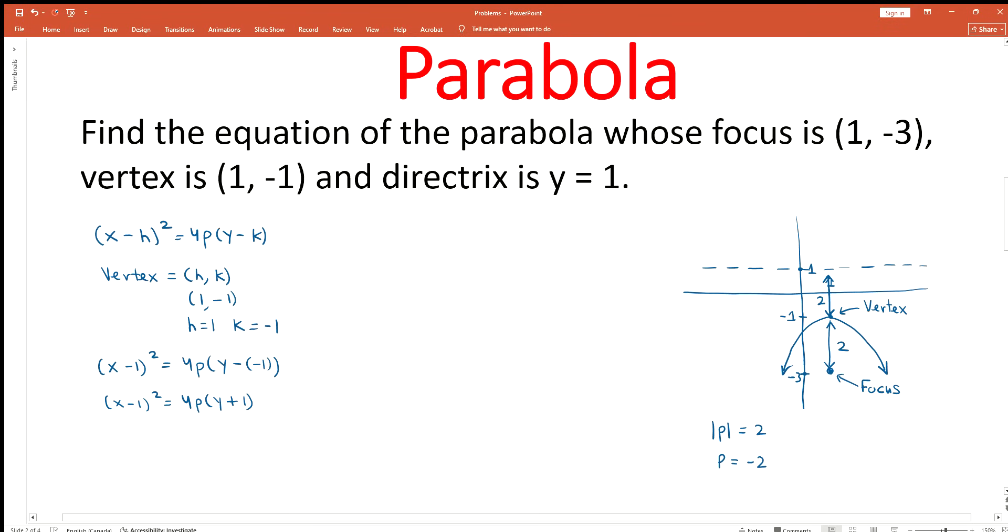This is a very important concept we need to understand and memorize. We can use this value of p in our equation. 4 times -2 equals -8. So (x - 1)² = -8(y + 1). This should be the final answer for the equation of this parabola in conics form.